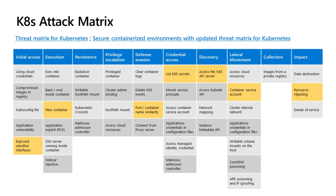So what did we see here? In the attack matrix — the MITRE attack matrix I showed before — in this specific attack, we saw exposed sensitive interfaces. There was execution of a new container, and several other bad things happened: the malicious user was able to take control of our system and create new containers for the mining workload.